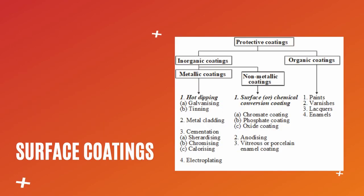Protective coatings are generally of two types: inorganic coatings and organic coatings. Inorganic coatings are further divided into metallic coatings and non-metallic coatings. Organic coatings include paints, varnishes, lacquers, and enamels. Metallic coatings involve applying one metallic material on the surface of another and are done by hot dipping, metal cladding, cementation, and electroplating methods. Non-metallic coatings include chemical conversion coating, anodizing, and vitreous or porcelain enamel coating methods.